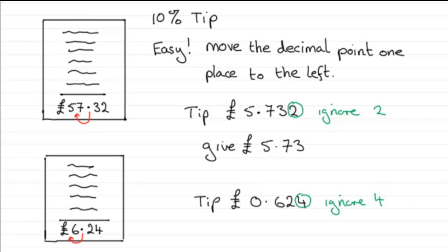And so how much are we going to give this time? £0.62 is better known as 62 pence. But again, it's up to you, whether you give a little more or a little less, but that is what 10% would be.